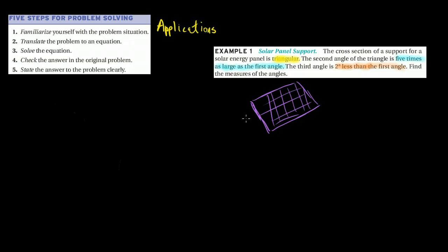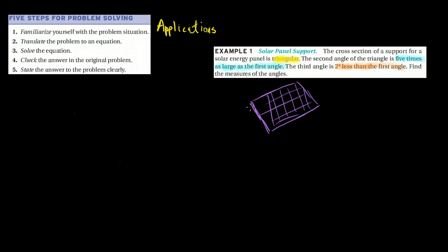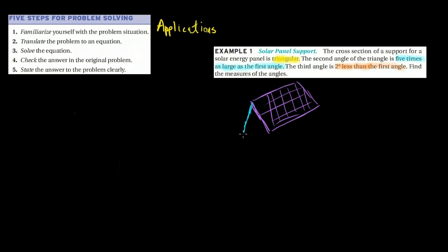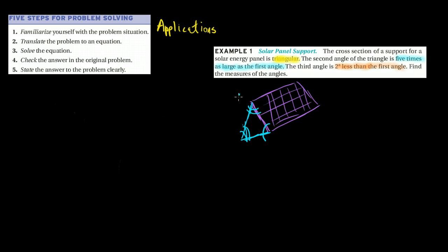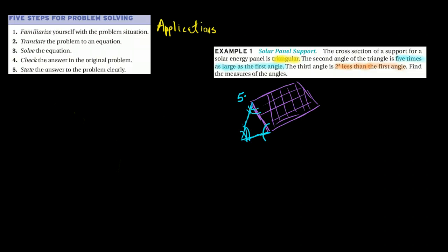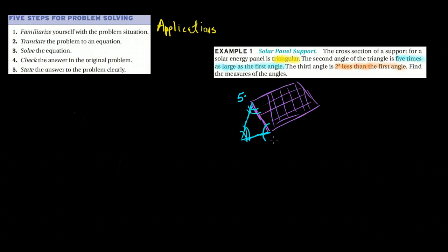Now the cross-section of the support looks like a triangle. And if this is the first angle, and this is the second angle, and this is the third angle, obviously not drawn to scale, then what I know is that the second angle is five times as large as the first. So if this is the second angle, it's five times something. Well, if this is the first angle, do we know how big the first angle is?